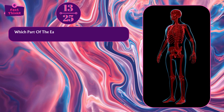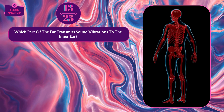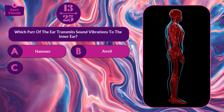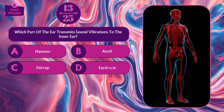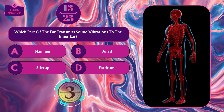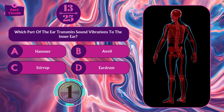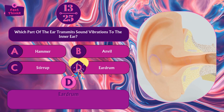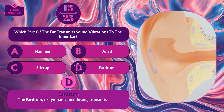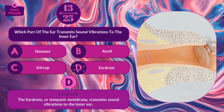Which part of the ear transmits sound vibrations to the inner ear? Hammer, anvil, stirrup, or eardrum? Option D — eardrum. The eardrum, or tympanic membrane, transmits sound vibrations to the inner ear.